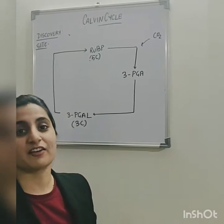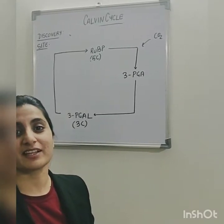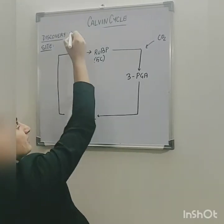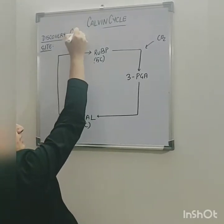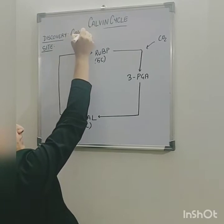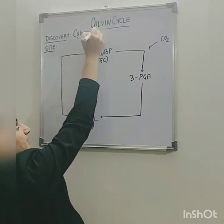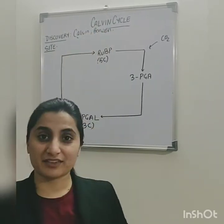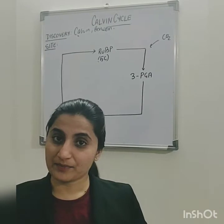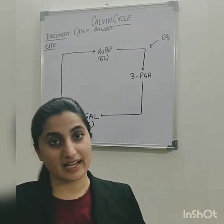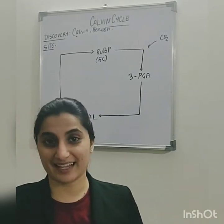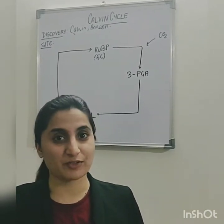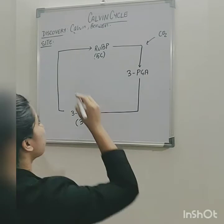The discovery of the Calvin cycle was done by Calvin and Benson, while working with an alga. The site of the Calvin cycle is said to be the stroma of the chloroplast.